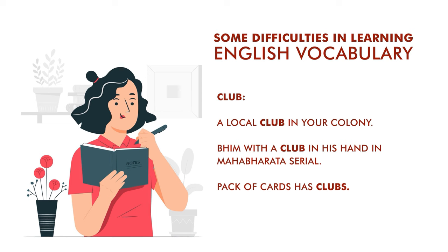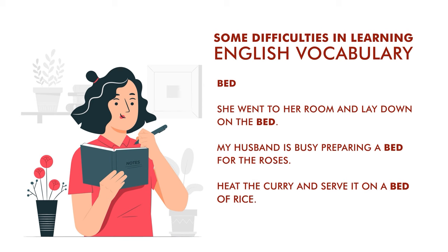For example, 'club': there's a local club in your country; Bhim has a club in his hand in the Mahabharata; and in a pack of cards you have clubs. Or take the word 'bed': 'She went to her room and lay down on the bed' — a bed in your bedroom. 'My husband is busy preparing a bed for the roses' — some soil so that roses can be planted. 'Heat the curry and serve it on a bed of rice.' So 'bed' has very different meanings.